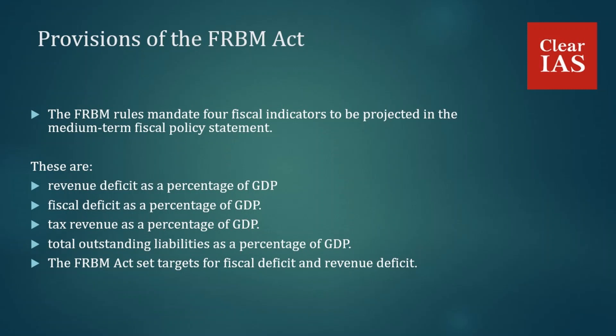Looking at the provisions of the Fiscal Responsibility and Budget Management Act, the FRBM rules mandate fiscal indicators to be projected in the Medium Term Fiscal Policy Statement. These indicators include: revenue deficit as a percentage of GDP, fiscal deficit as a percentage of GDP, tax revenue as a percentage of GDP, and total outstanding liabilities as a percentage of GDP. The FRBM Act also sets targets for fiscal deficit and revenue deficit.